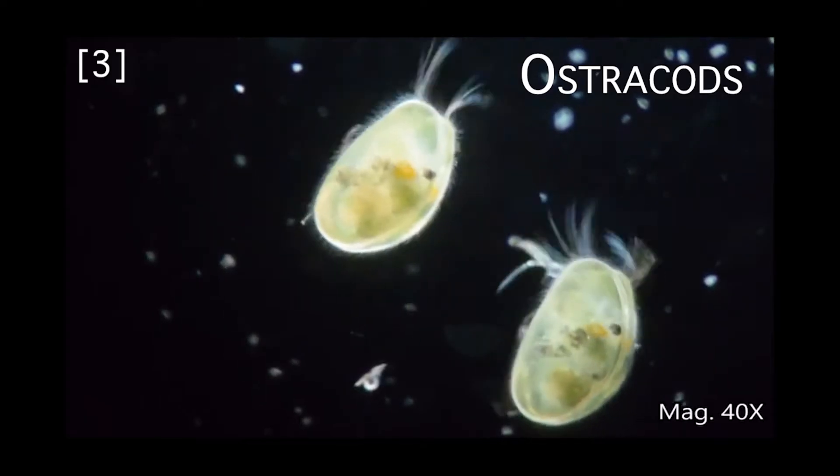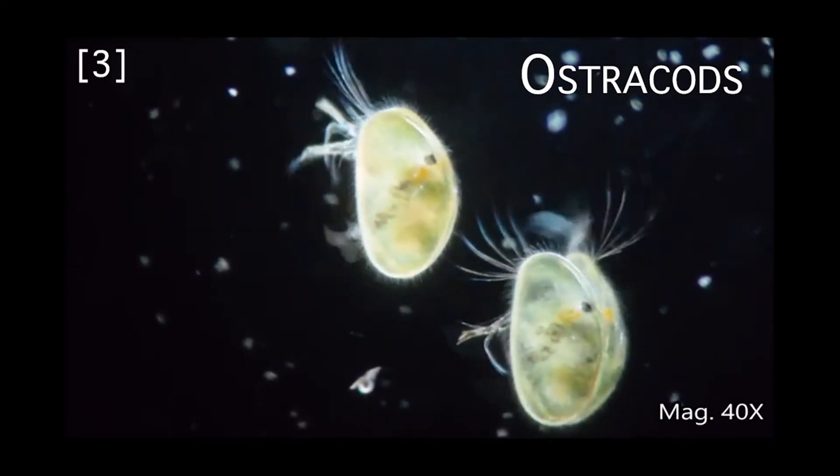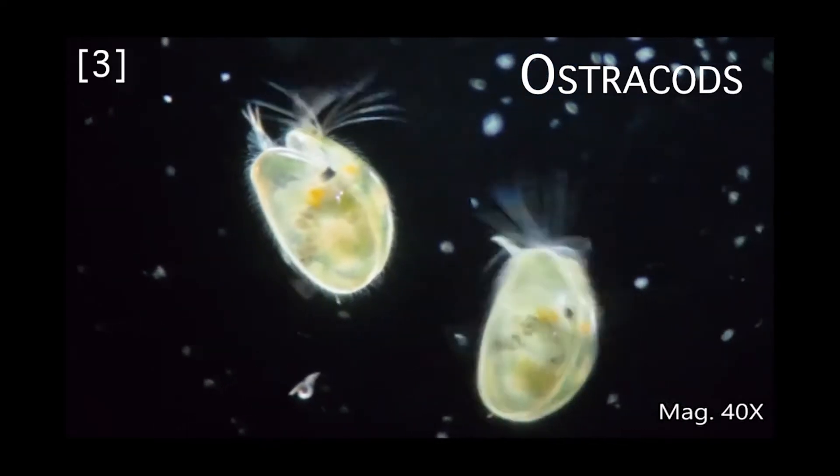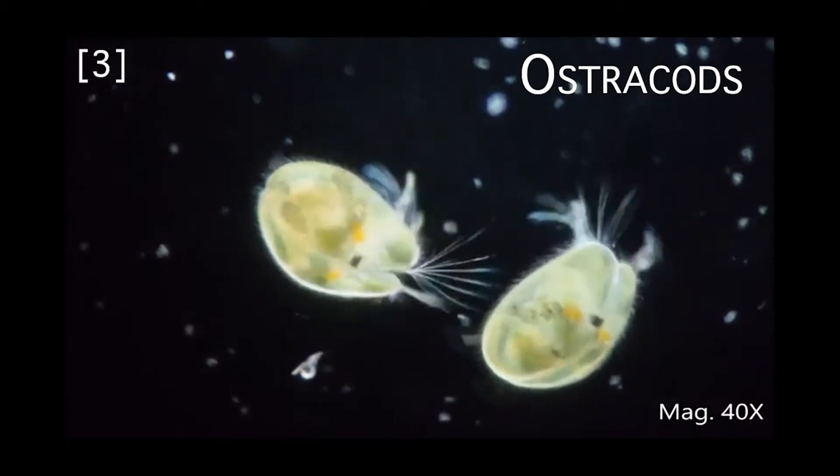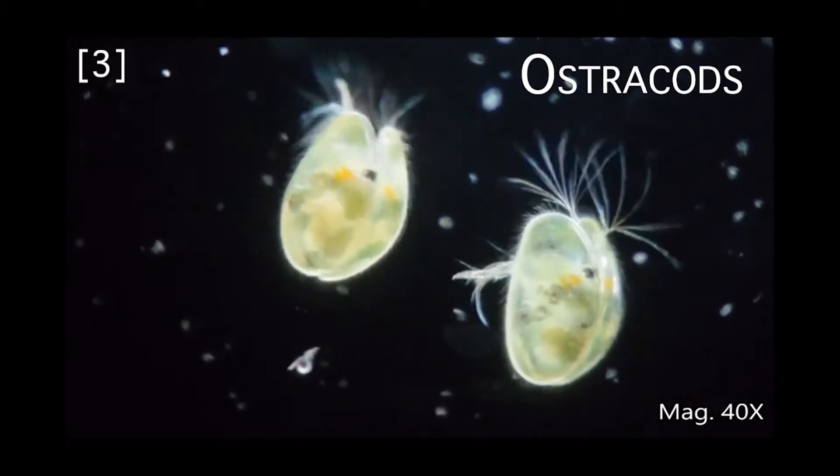There are also ostracods, which were about the same size as the foraminifera. These are tiny crustaceans that also lived in the ocean. What's different about these, though, is they can also live in other bodies of water, such as lakes.